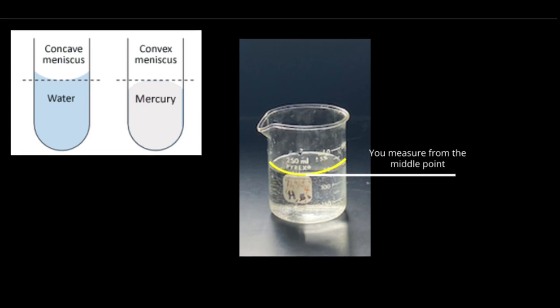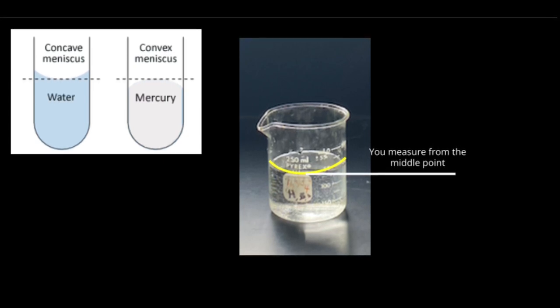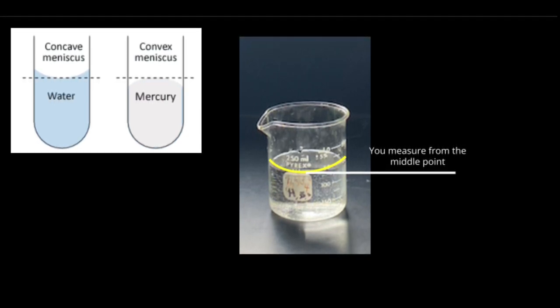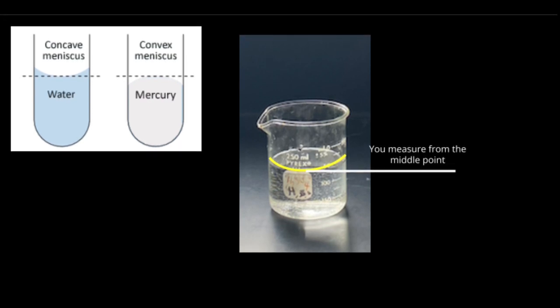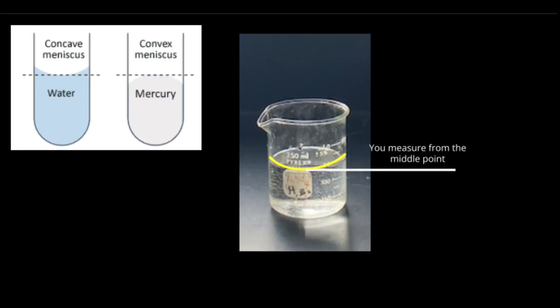When elements are poured into the beaker, they form a curve. The curve is known as a meniscus. The only way to read a beaker with a meniscus is to measure from the center of the curve regardless if it is concave which is the under curve or convex which is an over curve.